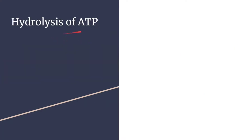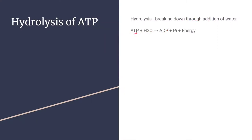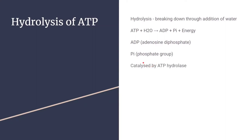The hydrolysis of ATP — hydrolysis means the breaking down through the addition of water. The hydrolysis of ATP equation shows an ATP molecule having water added to create ADP, a phosphate group, and energy. ADP is adenosine diphosphate, meaning two phosphates because one has been lost, and Pi is the notation for the phosphate group. This hydrolysis reaction is catalyzed by the enzyme ATP hydrolase and releases energy.